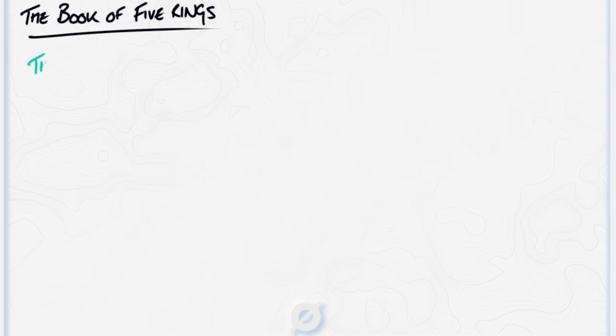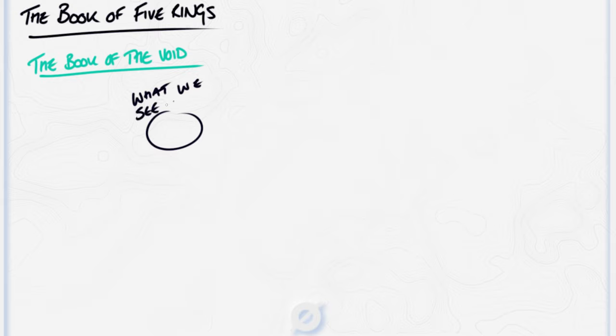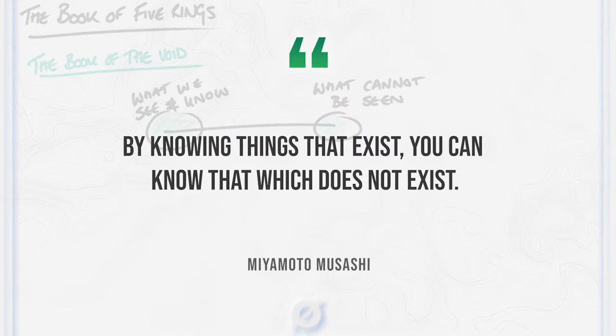The final book in Musashi's Book of Five Rings is the Book of the Void. This is a short book that links the philosophies of that which we can see and know, and that which cannot be seen. Musashi wrote, By knowing things that exist, you can know that which does not exist. The book is about people learning to perceive that which cannot be seen or understood. This is targeting things like spirituality, and things that are based more on instinct than knowing.